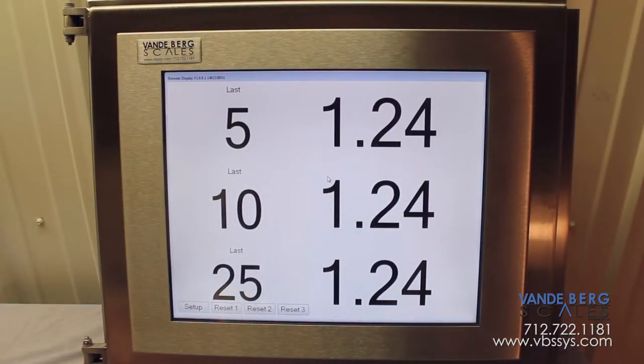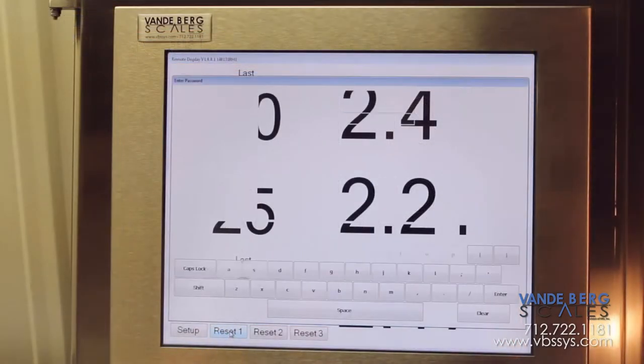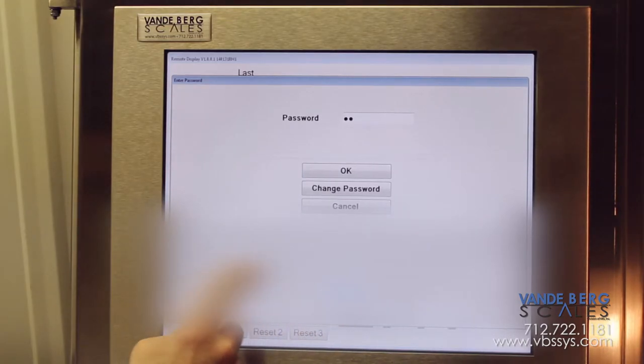These displayed averages will help the trimmers adjust their cuts and get closer to the fixed weights. Starting over by resetting the counts to zero is password protected.